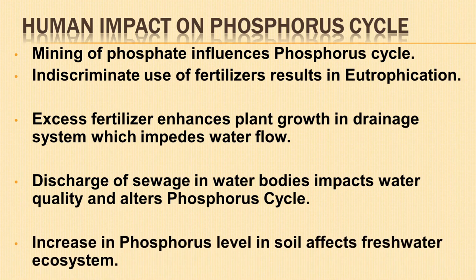An increase in phosphorus level and its accumulation in the soil also affects freshwater levels and our ecosystem. Today we have learnt in detail about the different steps in the phosphorus cycle, different forms of phosphorus, and its role in the ecosystem.